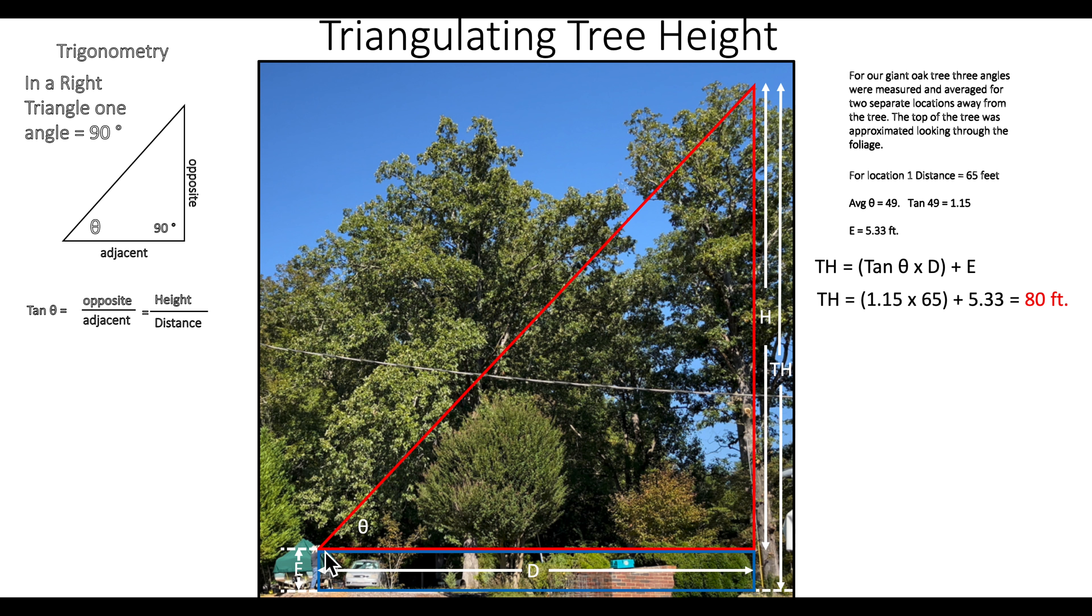Basically, you can just calculate the tangent of that angle. Tangent 49 equals 1.15, that was the angle, 49. Eye height, 5.33. So, add those together, that gives us a total height of 80 feet.